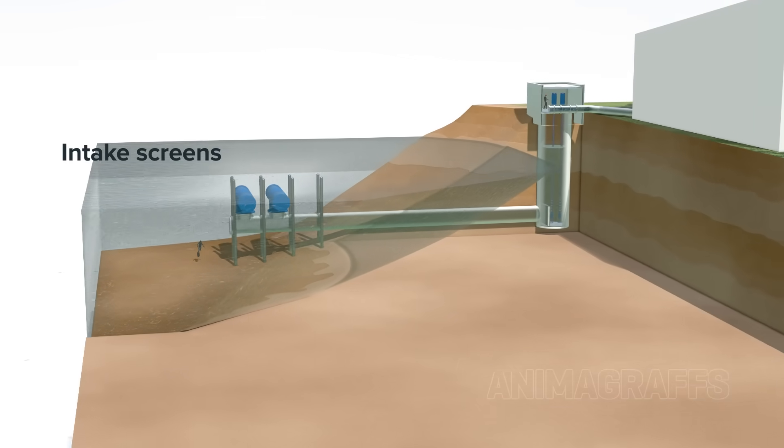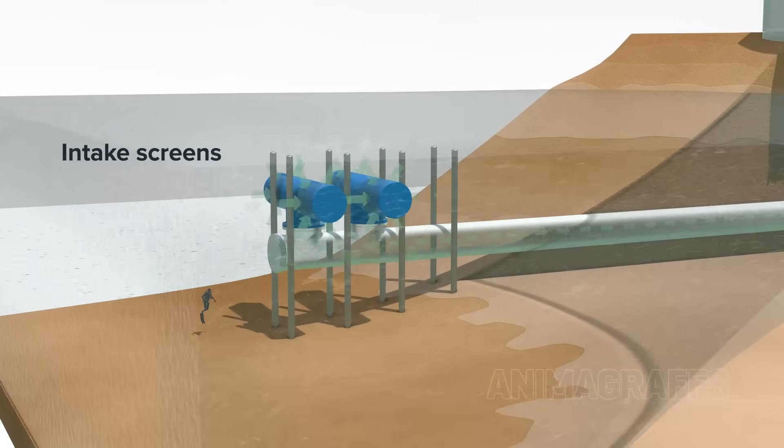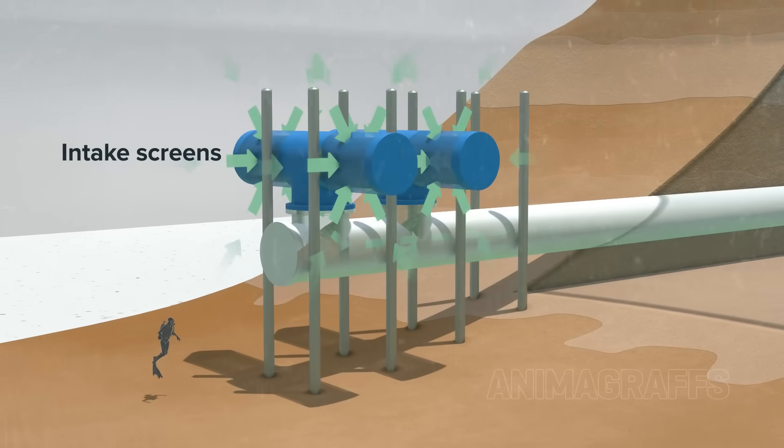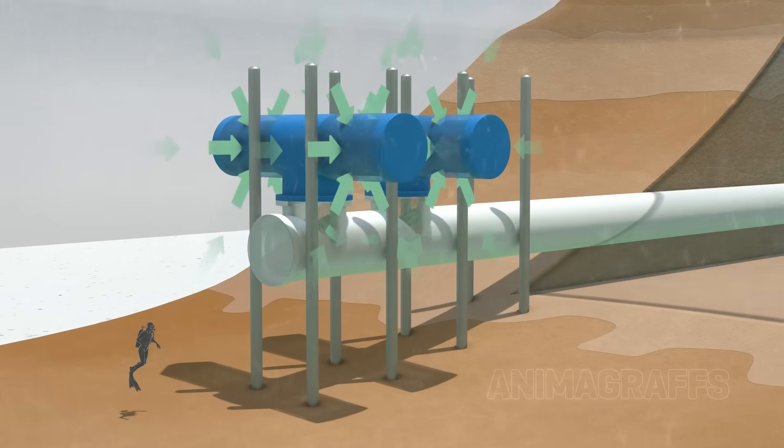Cylindrical intake screens are placed in a reservoir in such a way to best avoid ingesting silt from the reservoir bottom or floating material from the surface.